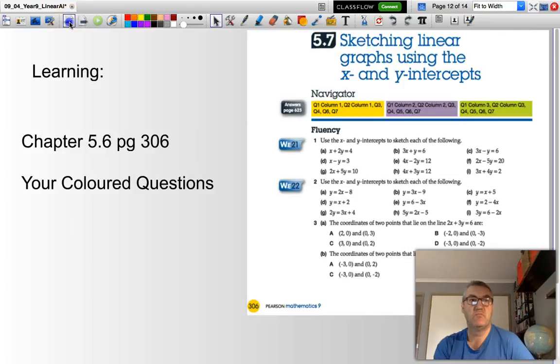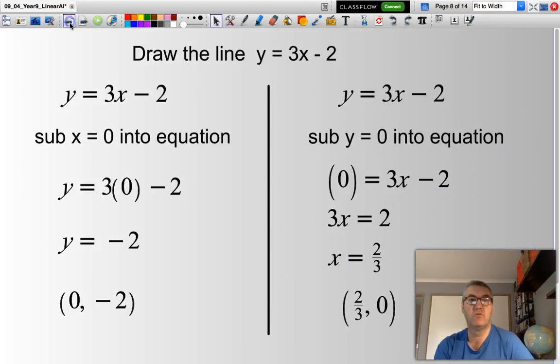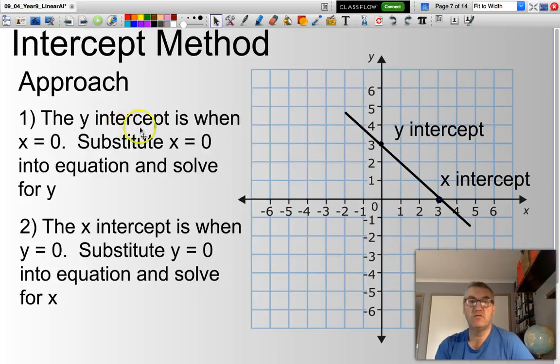So, that's it. Just in summary, the y-intercept is when x = 0. So what we do from our equation is substitute x = 0 into that equation and solve for y.